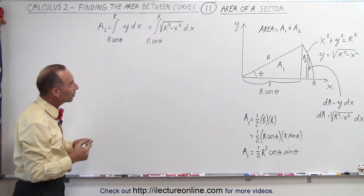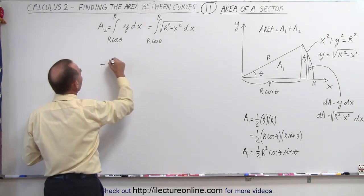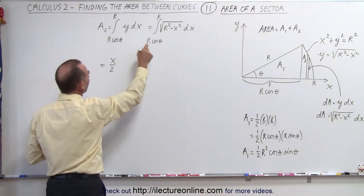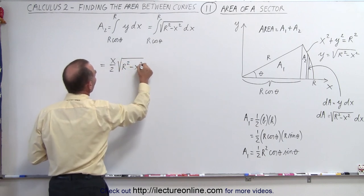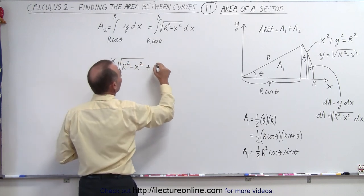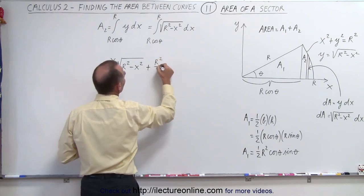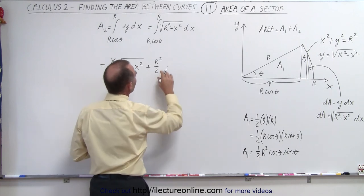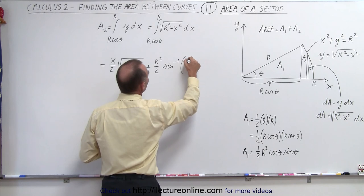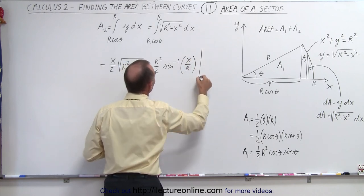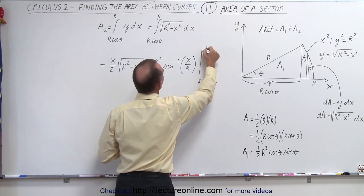What is the integral of the square root of r² minus x²? That will be equal to x divided by 2 times the square root of r² minus x², plus r² divided by 2 times the inverse sine of x over r. And that will have to be evaluated from r·cosθ to r.